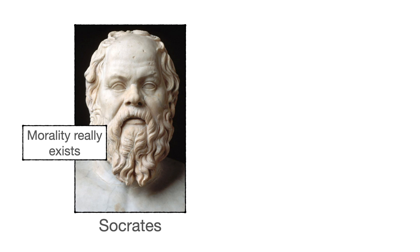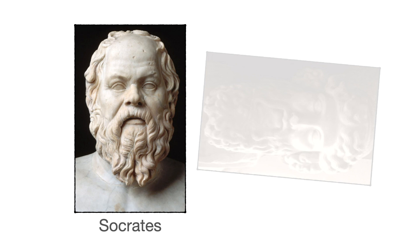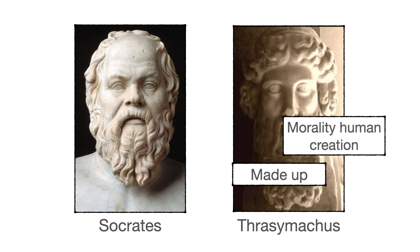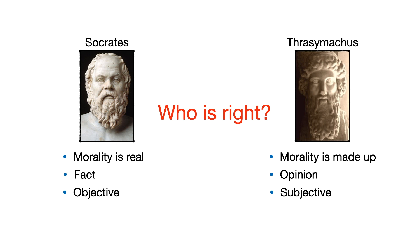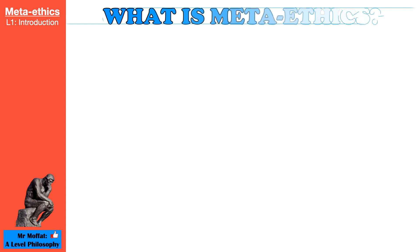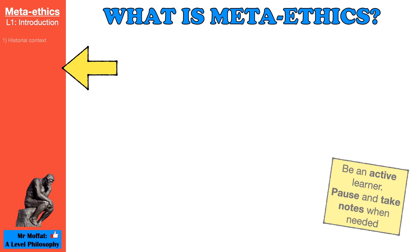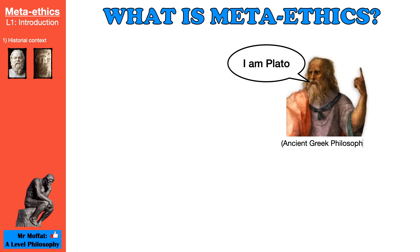On the one hand, Socrates argued that morality really exists and that we can judge human actions against an unchanging and objective standard. But then we have Thrasymachus who disagreed and argued that morality is just a human creation — it's made up. Who is right? Is morality real or made up? Is morality about fact or opinion? Objective or subjective? These are the sorts of questions asked in metaethics. This is a video tutorial introducing metaethics for A-level students. What we have just seen is one of the earliest recorded discussions on metaethics, found in Plato's Republic.